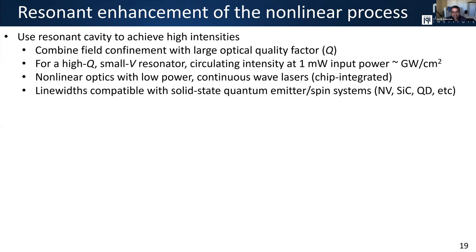Unfortunately, we typically don't use waveguides in silicon nitride alone because it's not a nonlinear enough platform for high efficiencies at low pump powers. Instead, we put these things in optical resonators, combining field confinement with large optical quality factors. This means you can access very large circulating intensities for milliwatt-level input powers, consistent with the types of chip-integrated compact lasers I've been describing. There's also the point that in the quantum domain, we might want spontaneously generated photons to have the same linewidths as photons from solid-state quantum emitters like quantum dots or color center spins — photons with linewidths of maybe 10 MHz to GHz depending on the system — which is really compatible with using these high-Q cavities.